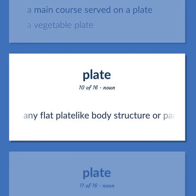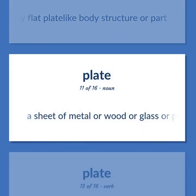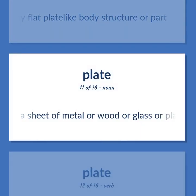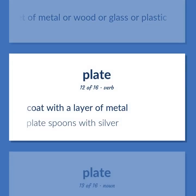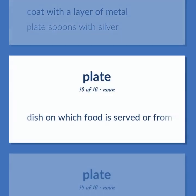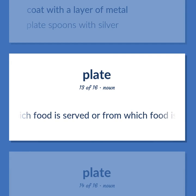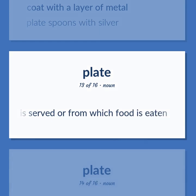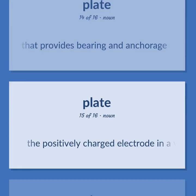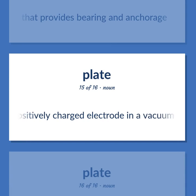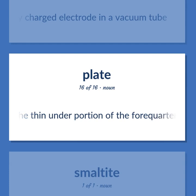Any flat plate-like body structure or part. A sheet of metal or wood or glass or plastic. Coat with a layer of metal — plate spoons with silver. Dish on which food is served or from which food is eaten. Structural member consisting of a horizontal beam that provides bearing and anchorage. The positively charged electrode in a vacuum tube. The thin under portion of the forequarter.